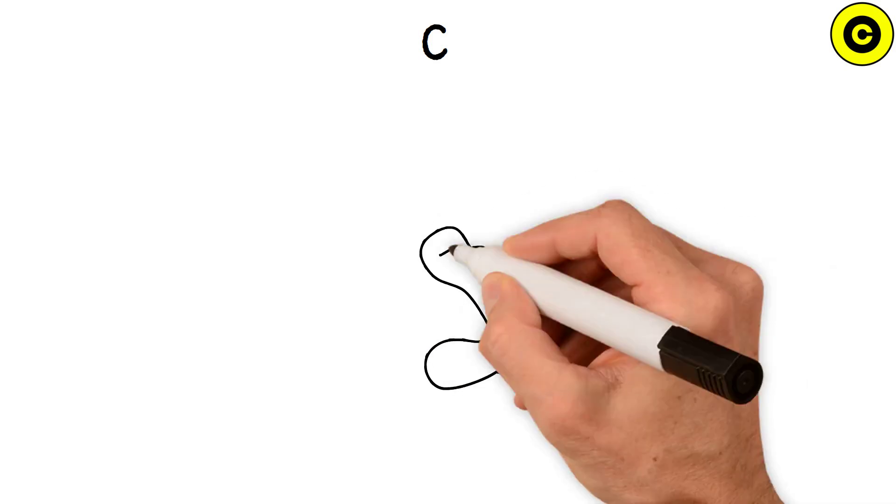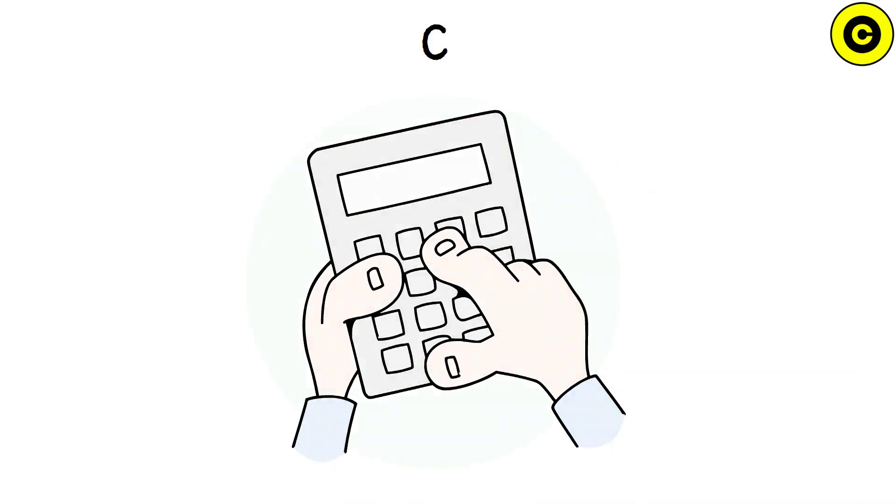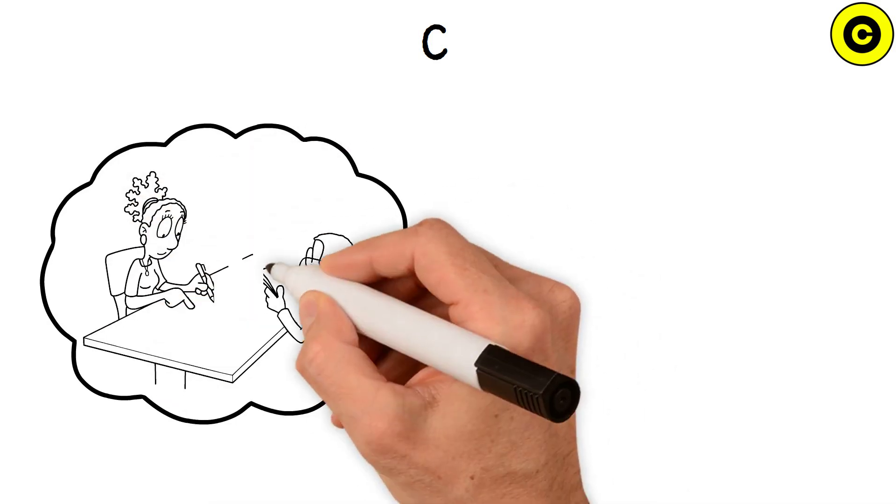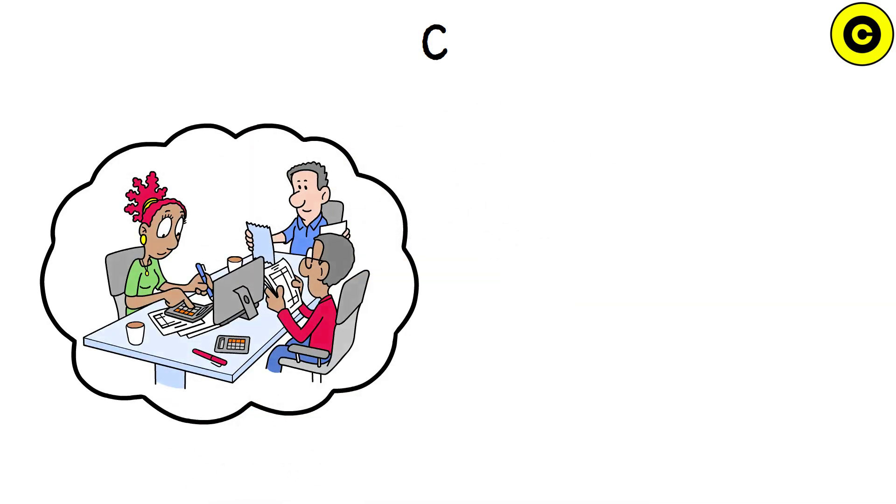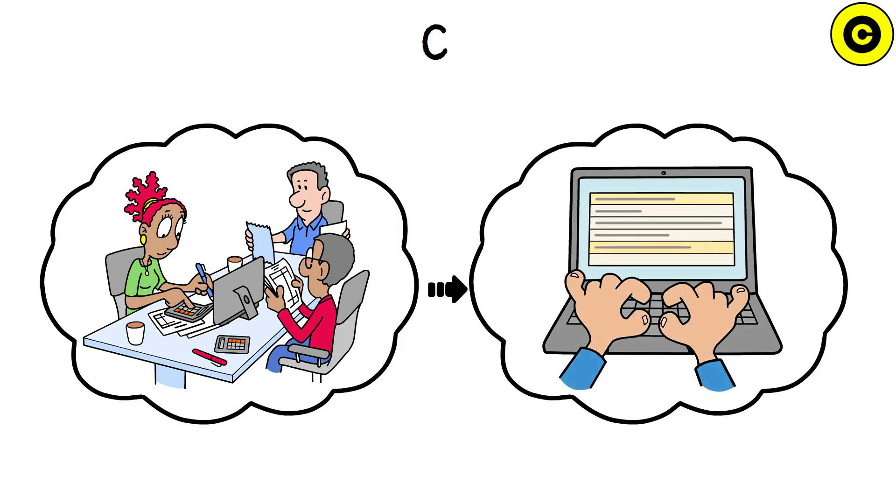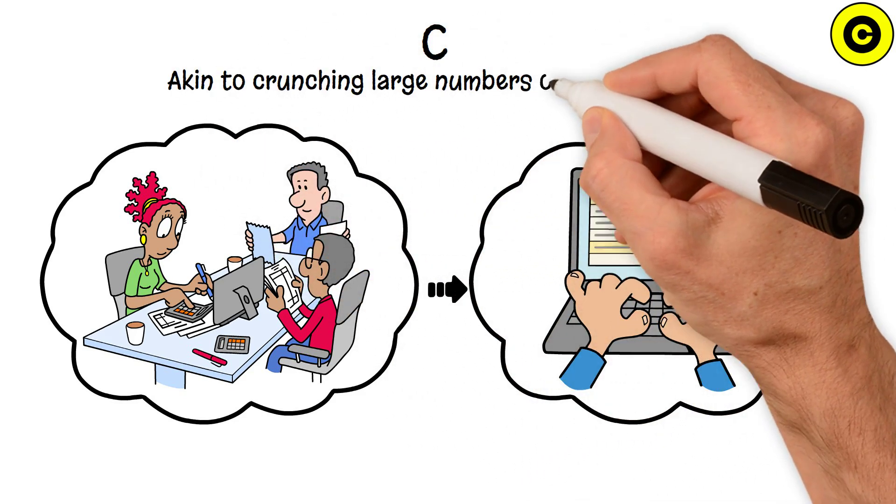C. Think of C as an old-school calculator. It's basic but highly efficient. Developers turn to C when they need to execute complex calculations or processes swiftly, akin to crunching large numbers on a calculator.